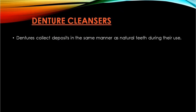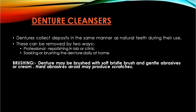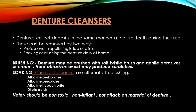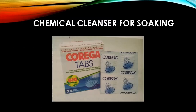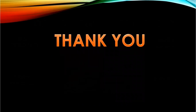Denture cleansers are materials for cleaning the denture, as dentures collect deposits in the same manner as natural teeth during function. Deposits are removed in two ways: either professionally by repolishing in the lab or clinic, or by soaking or brushing the denture daily at home. Brushing with a soft bristle brush and gentle abrasive or cream is preferred, as coarse abrasives result in roughening of the denture surface. Soaking is an alternative to brushing in which chemical cleansers are used — they should be non-irritant and not attack the denture surface. Examples are alkaline perborate, alkaline peroxide, alkaline hypochlorite, and dilute acids.